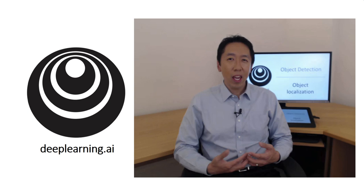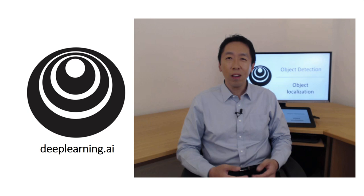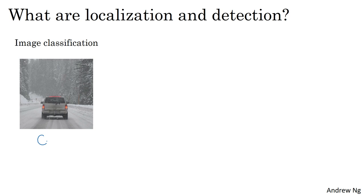Hello and welcome back. This week you learn about object detection. This is one of the areas of computer vision that's just exploding, and it's working so much better than just a couple of years ago. In order to build up to object detection, you first learn about object localization. Let's start by defining what that means.